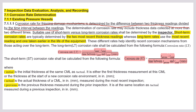Before reaching that safe limit, we have to repair, do an alteration, or re-rate the pressure vessel in order to save it or extend its life. The determination of corrosion rate may include thickness data collected at more than two different times.